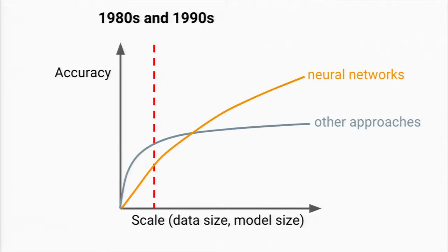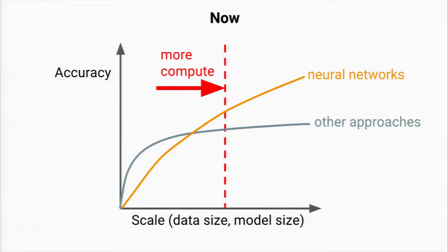But what's happened is we now have a lot more compute, thanks to Moore's law. So now we're roughly at the point shown with the red dotted line where neural networks are suddenly demonstrating all these breakthroughs across a wide variety of domains that were previously unconnected.